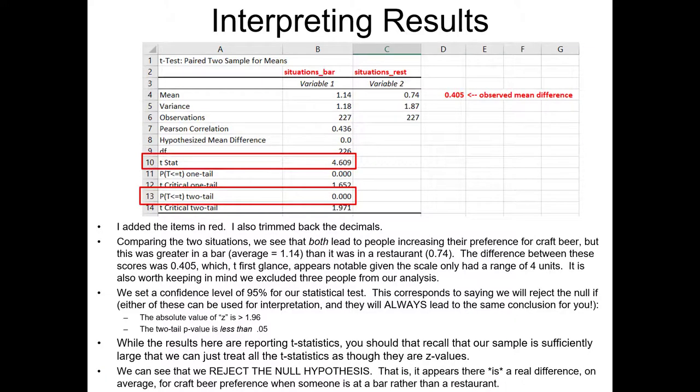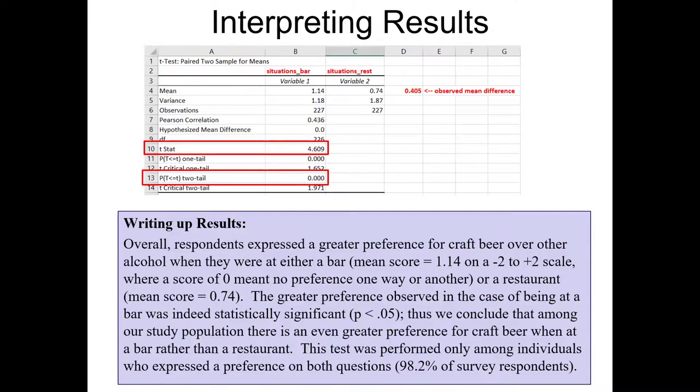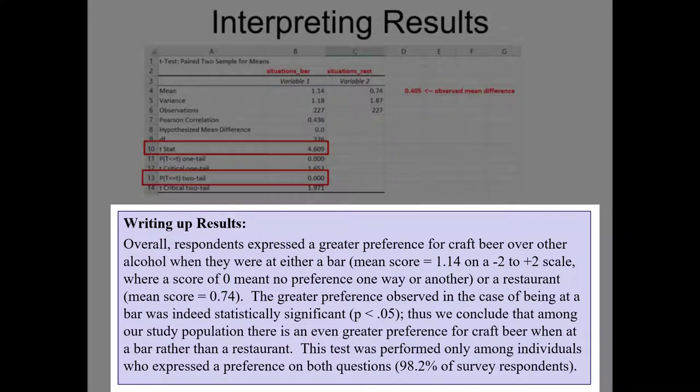Now, how would we write up these results? A more comprehensive write-up might look like this. Overall respondents expressed a greater preference for craft beer over other alcohol when they were at either a bar, a mean score of 1.14 on a negative 2 to positive 2 scale, or a score of 0 meant no preference one way or the other, or a restaurant, a mean score of 0.74.